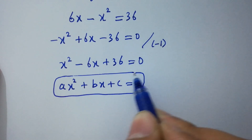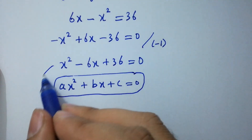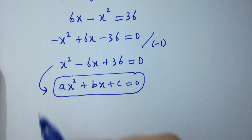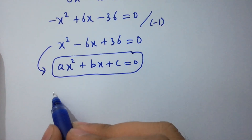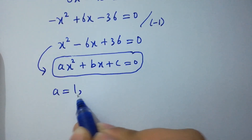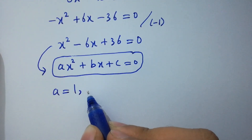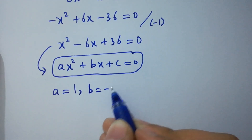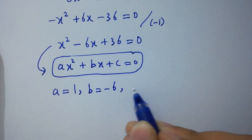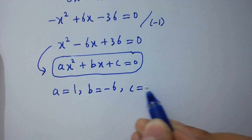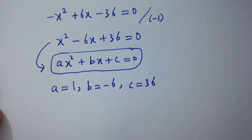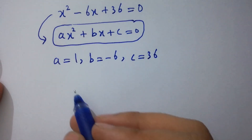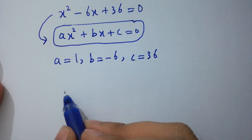By comparing with the standard quadratic form, we have a equals 1, b equals minus 6, and c equals 36. Now apply the quadratic formula.